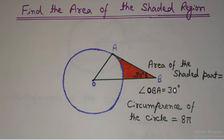Watch this video till the end. The area of the shaded part we need to calculate. The things that are given here are angle OBA which is equal to 30 degrees, and we are also given the circumference of the circle which is equal to 8π. So without wasting time, let's get started.